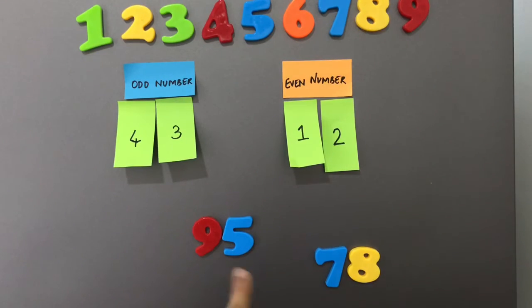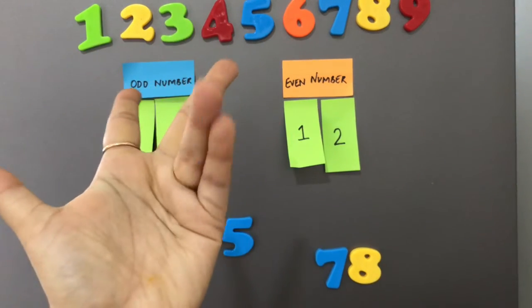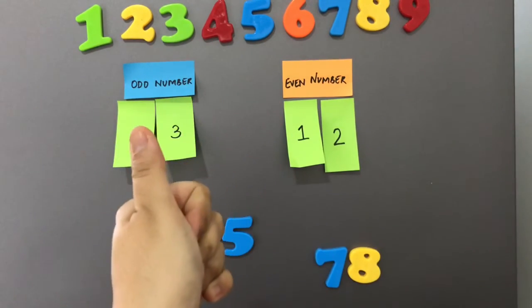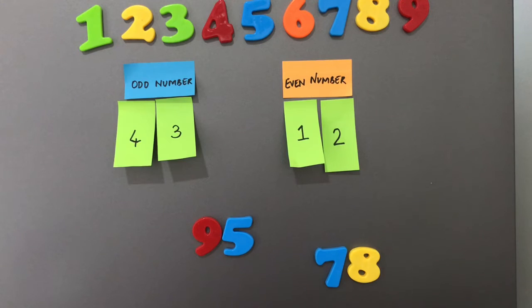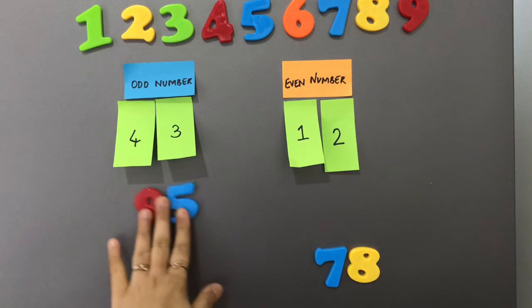Next we have number ninety five. So five fingers out. Make your pairs. One finger left alone. So ninety five becomes our odd number again.